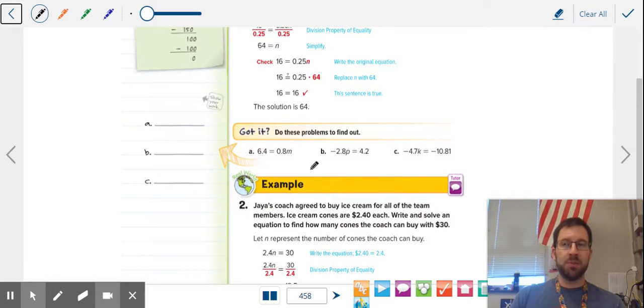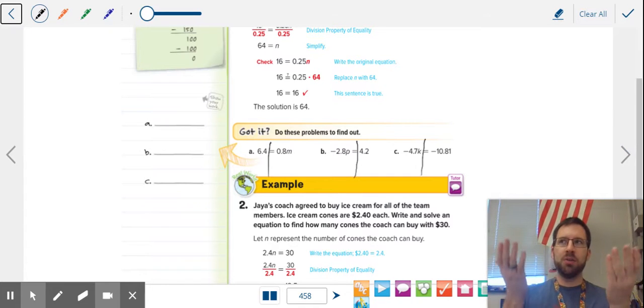These are all multiplication equations. So remember, anytime you have an equation, I like to draw a line down the equal sign just to show that there are two equal halves. How do we balance the equation? You've got to undo what is in the equation. So these are multiplication equations. The opposite of multiplication is division.